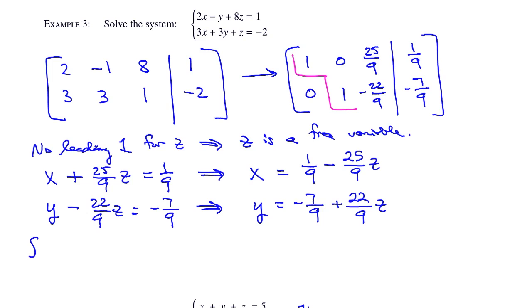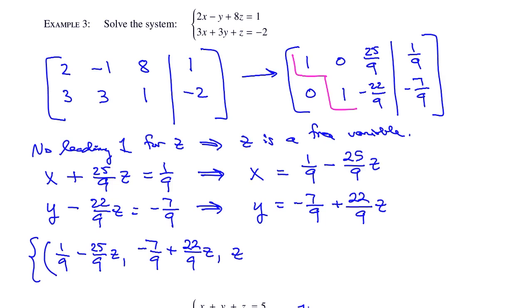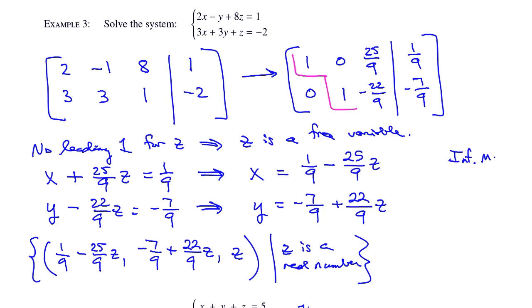Form the solution set: the set of ordered triples x, y, z, where x is 1 ninth minus 25 over 9 z, y is negative 7 ninths plus 22 over 9 z, and z is z — such that z is a real number. We have infinitely many solutions. The system is consistent and the equations are dependent.